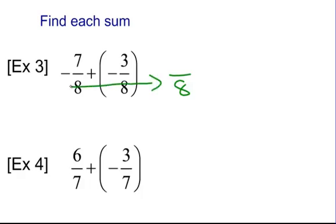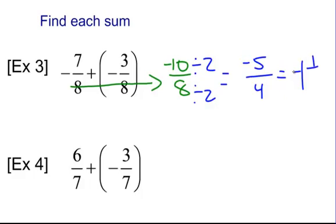We have negative 7/8 plus negative 3/8. It's basically like negative 7 plus negative 3. So it's like 7 bad guys and 3 more bad guys - you have 10 bad guys. So we have negative 10/8. Now we need to reduce that. You always reduce fractions no matter what, even if it's not in the directions. Divide by 2: you get negative 5/4. And then you can make that a mixed number: negative 1 and 1/4, because 4 goes into 5 once and you have 1 left over.